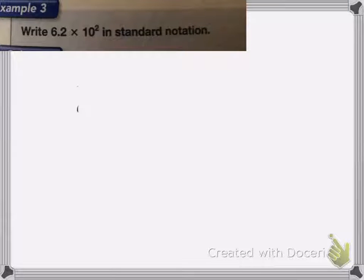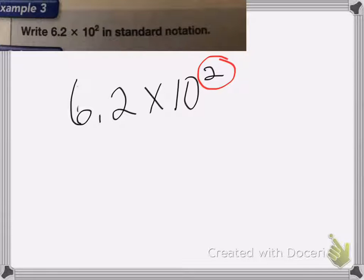Now we have multiplying by powers of 10. So we want to write 6.2 times 10 to the second power in standard notation. Remember standard notation just means a regular number. Now in multiplying by powers, I know that if I look at the power given, that's how many times I need to move my decimal place.